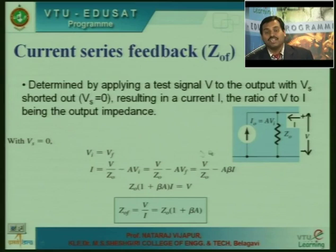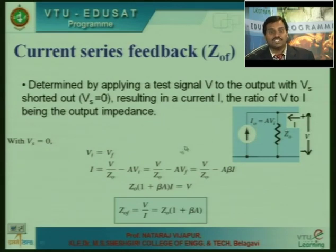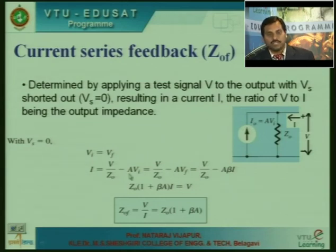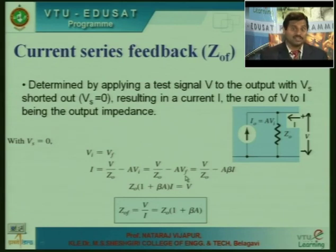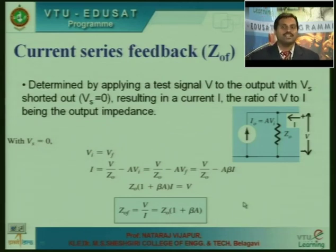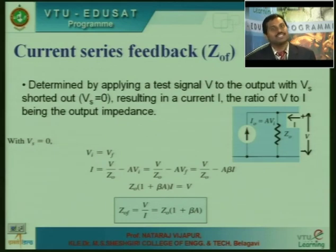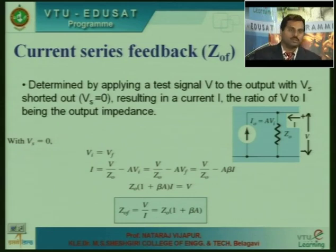Substituting V_i equals V_f since V_s is zero, and solving, we get output impedance as Z_naught times (1 plus A times beta). This way, we can determine input impedance, output impedance, and closed loop gain for all feedback configurations — voltage series, voltage shunt, and current series.